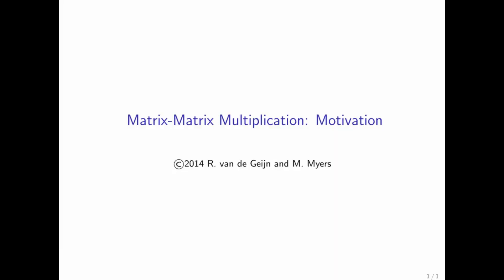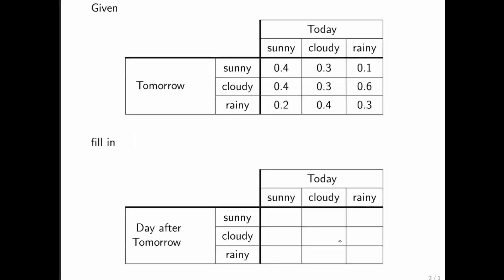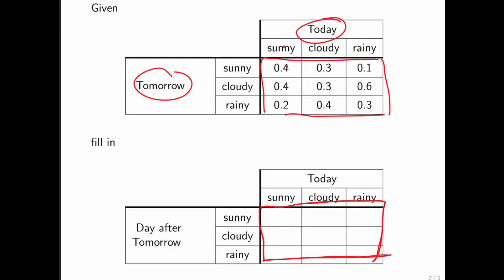To motivate matrix-matrix multiplication, we're going to go back to the opener for this week and talk a bit more about our weather prediction model. Recall that we have a table that predicted the weather for tomorrow based on what the weather was today. One of the last questions we asked was how to compute the table that tells us how to predict the weather the day after tomorrow from the weather today. We talked about how that was a matter of tracking how the unit basis vectors were transformed by multiplying by the transition matrix that takes a state vector from one day to the next.